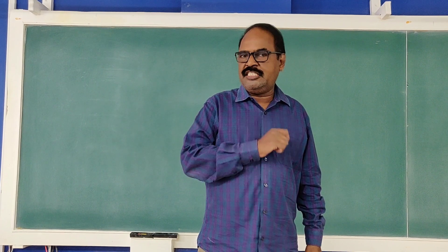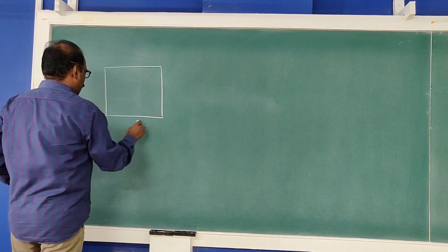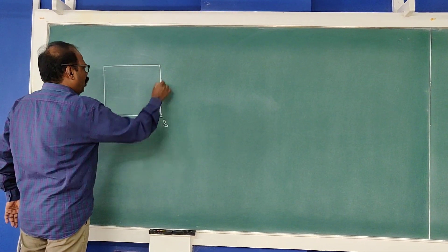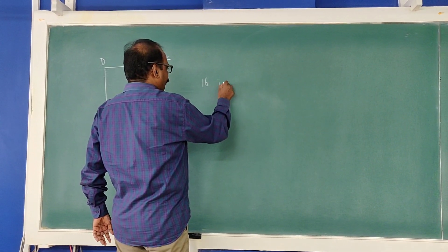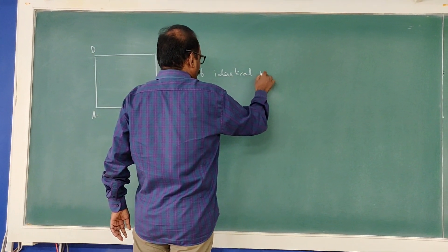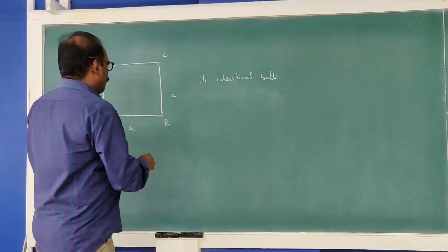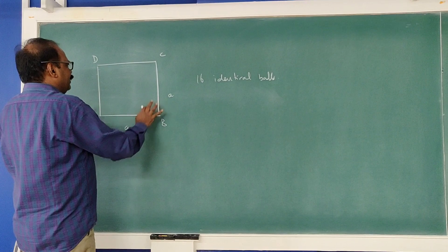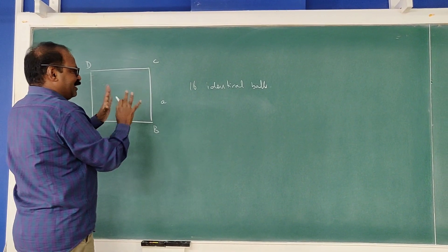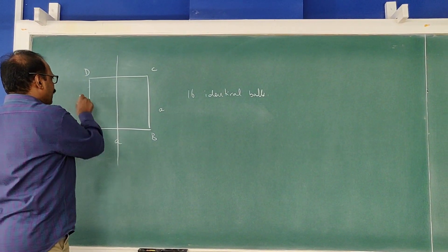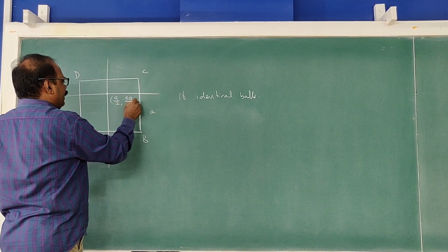Now look at this problem. There is a square ABCD of side A. I am giving you 16 identical balls — that means all of them will have equal mass. You have to place the balls at the corners of the square, maybe 3 here, 5 here, like that — totally 16. The condition is I want the center of mass at (A/2, 3A/4).